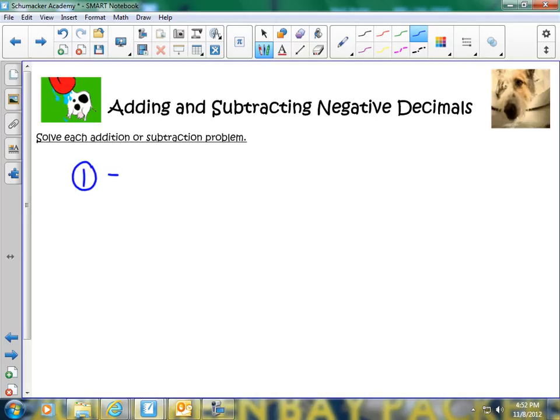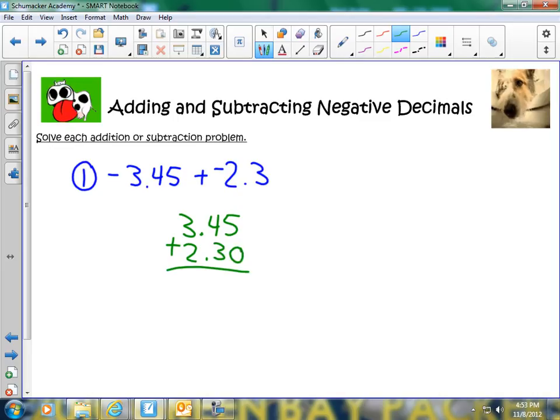Let's say if I have a number like negative 3 and 45 hundredths plus negative 2 and 3 tenths. Well, the first thing we've got to do is we have to remember when we're adding decimals and subtracting decimals, we always want to line up the decimals. So we're going to do 3 and 45 hundredths plus 2 and 3 tenths, add the zero. Now, the reason we can add these is because since we have two negative numbers, it's the exact same thing as adding two positive numbers except for they're negative. So let's go ahead and do this.